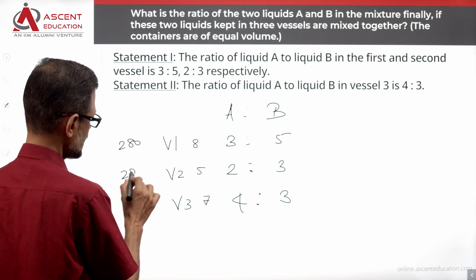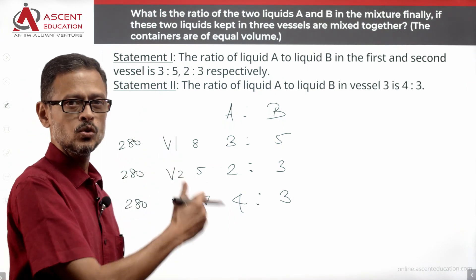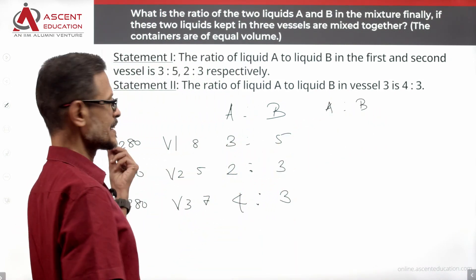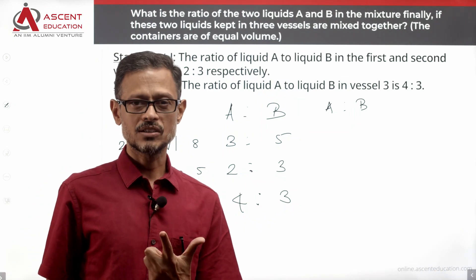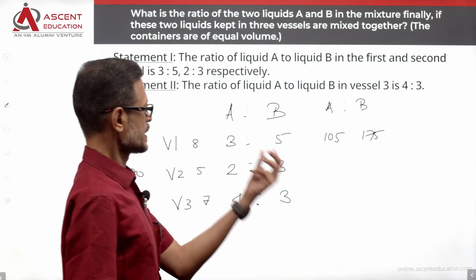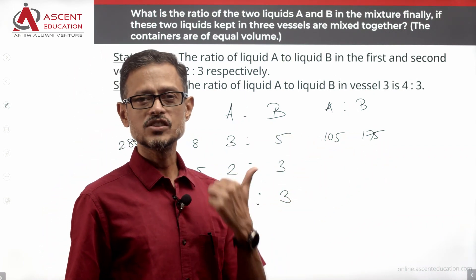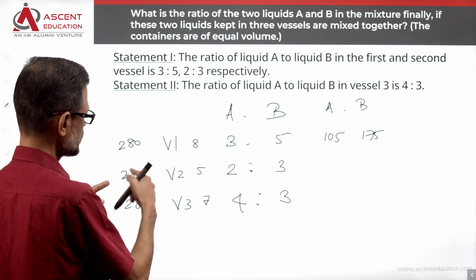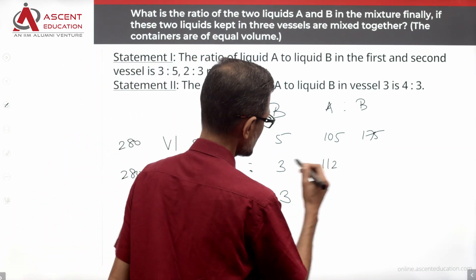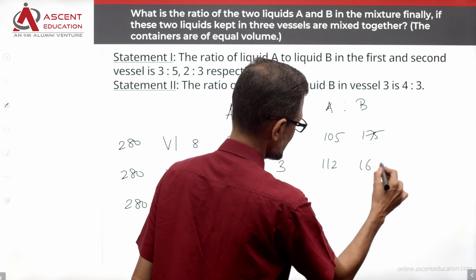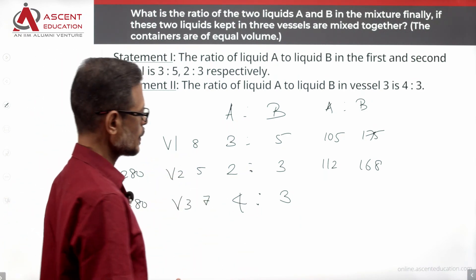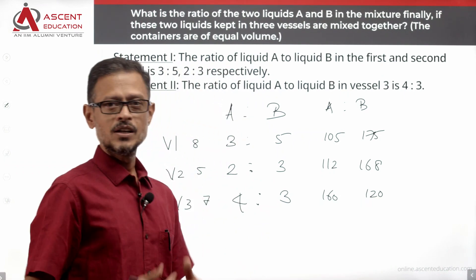280 liters each vessel. A to B is 3 is to 5, 8 parts divided. 280 divided by 8, we get each part to be equal to 35. So 35 into 3, 105 liters of A. 35 into 5, 175 liters of B. So 280 liters 3 is to 5 is 105, 175 in vessel 1. Vessel 2 is 280, 2 plus 3 is 5 parts divided. 5 into 56, 56 into 2 is 112. 56 into 3 is 168. That is 280 liters. Third vessel is divided into 7 parts. Each part is 40 liters. So 4 parts is equal to 160, 3 parts is equal to 120. This is how it is mixed.